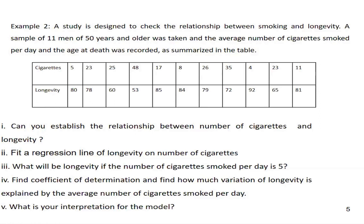Question number two: fit a regression line of longevity on number of cigarettes. But first of all, you have to show that the two variables are related. If they are related, then we fit a regression line of longevity on number of cigarettes — that is, longevity will be our dependent variable because we have to find how many years a person will live based on the number of cigarettes they smoke per day.